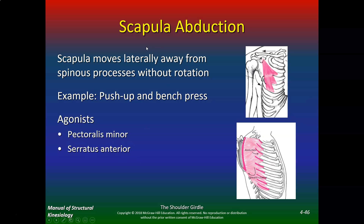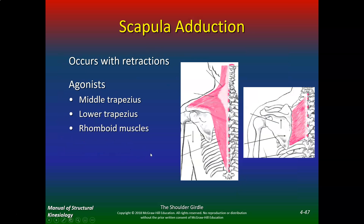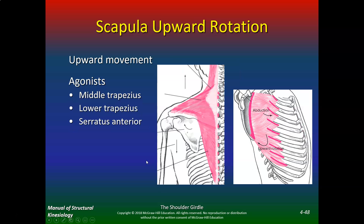Scapular adduction occurs with retraction — squeezing your shoulder blades together. The muscles involved are middle trap, lower trap, and rhomboids. If you have forward shoulders, you want to work middle trap, lower trap, and rhomboids to get those shoulders back. Upward rotation is caused by middle trap, lower trap, and serratus anterior.